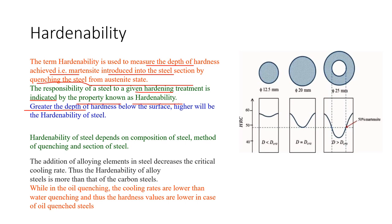Greater the depth of hardness below the surface, higher will be the hardenability of the steel. Hardenability of the steel depends on the composition of the steel as well as the method of quenching and section size of the steel.